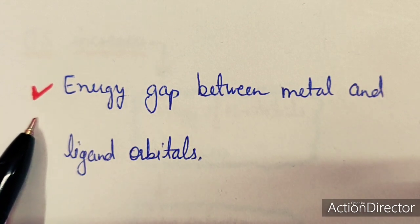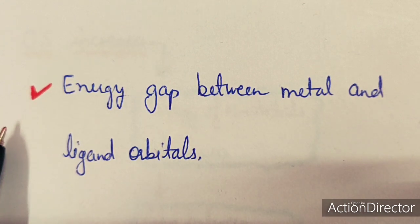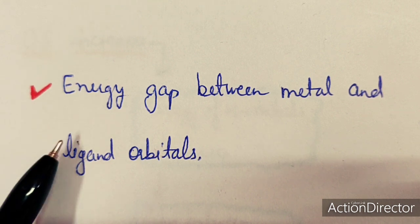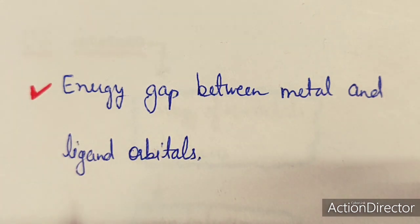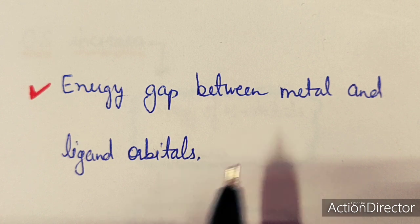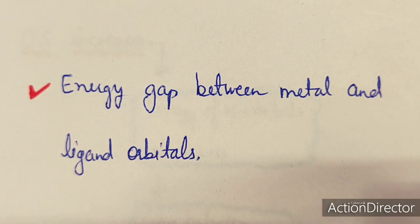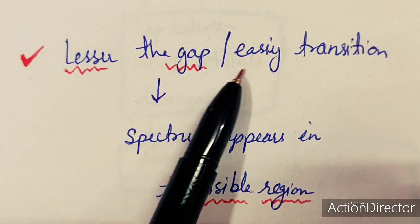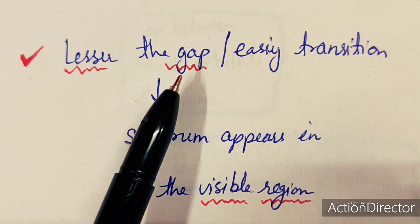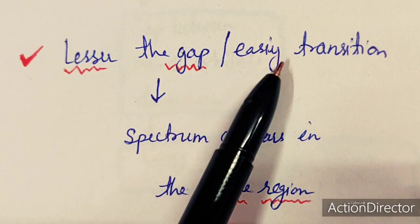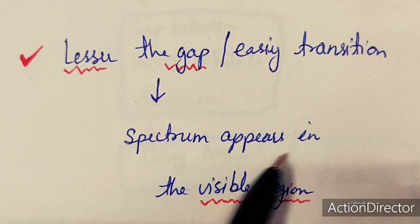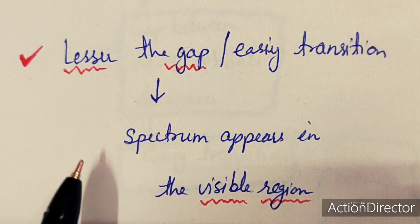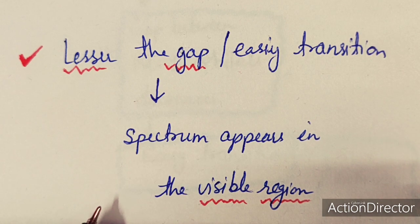The energy gap between metal and ligand orbitals is the main factor affecting intensity of charge transfer spectra. If the gap is lesser, the transition becomes easy because lower energy is required, and the spectrum appears in the visible region. If the gap is high, the spectrum appears in the ultraviolet region.